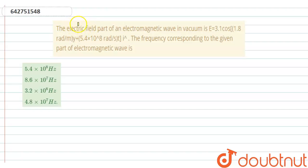Hi everyone, our question is: the electric field part of an electromagnetic wave in vacuum is E = 3.1 cos[(1.8 rad/m)y + (5.4 × 10^8 rad/s)t] i cap. The frequency corresponding to the given part of electromagnetic wave is.